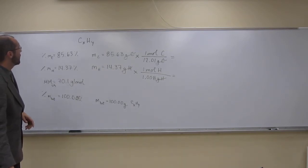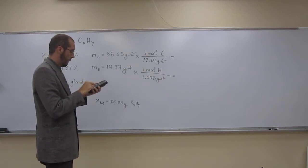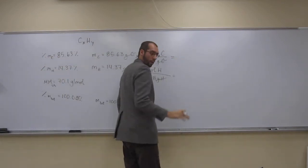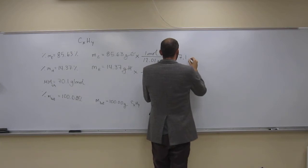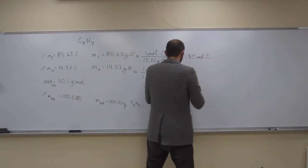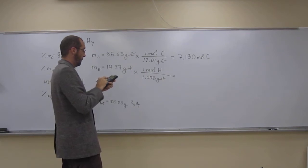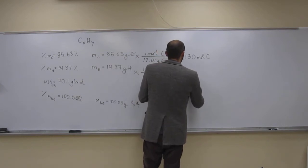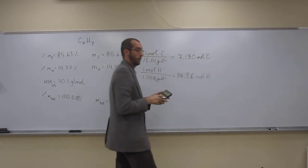So, now we're just going to convert these to moles. What do we got? 85.63 divided by 12.01, and that equals 7.130 moles of carbon. And then, 14.37 divided by 1.008 is 14.26 moles of hydrogen.